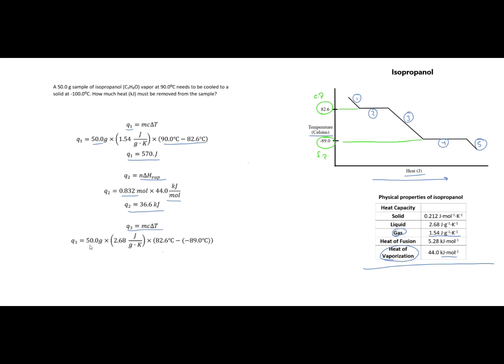Again I have my mass. My specific heat in this case comes from the table. I am using a liquid here so I'm using the specific heat 2.68 joules per gram times Kelvin. My change in temperature is simply from my condensation point all the way down to my freezing point.